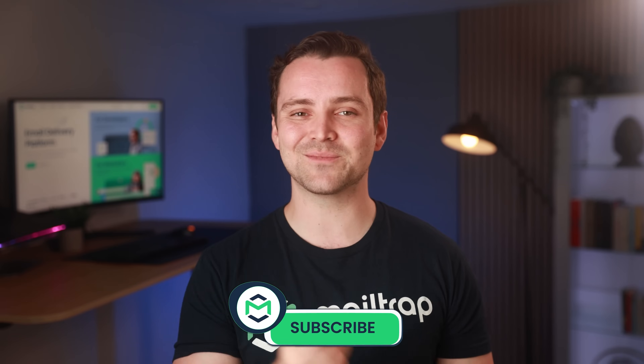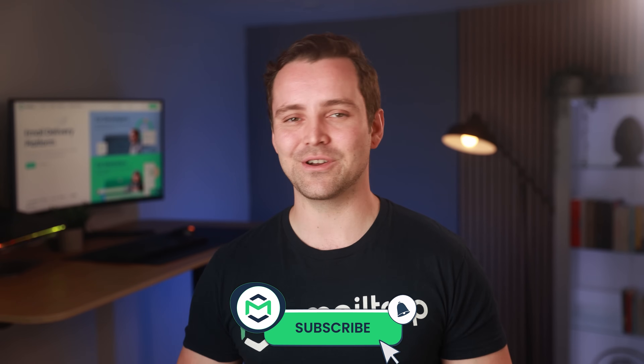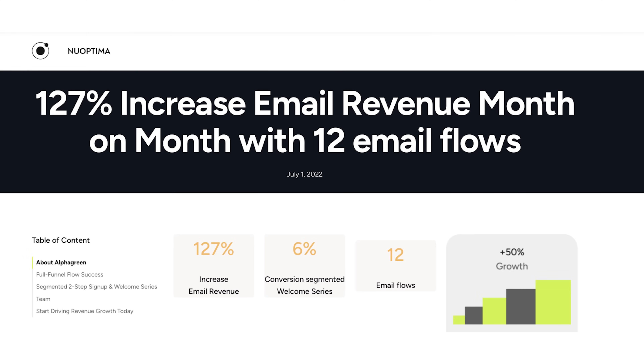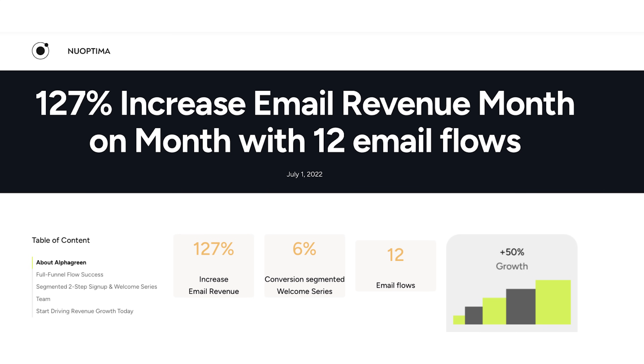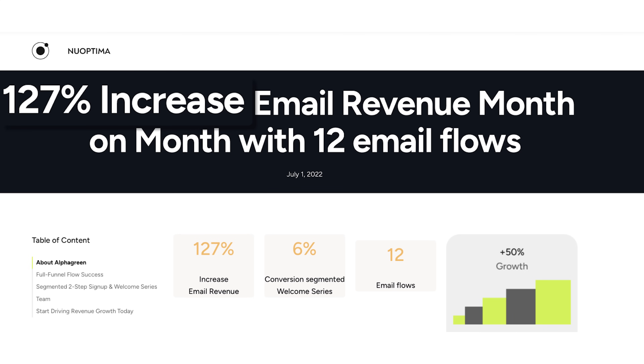And now, let's break down a funnel that boosted email revenue by 127%. But before we move on, don't forget to subscribe to our channel for more expert tips and practical tutorials on all things email. The example comes from Alphagreen, an e-commerce brand focused on health and wellness. They set up 12 targeted email flows, and the result? A 127% month-over-month increase in email revenue.